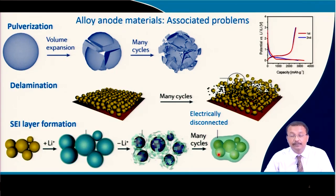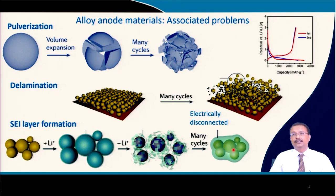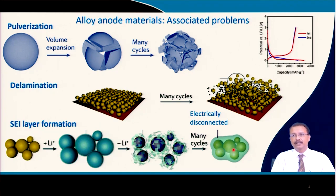If the SEI layer is impervious to lithium ion, then that is also a problem. This is related to the LUMO band and the Fermi energy level of the anode, which I have explained several times in my earlier lectures.